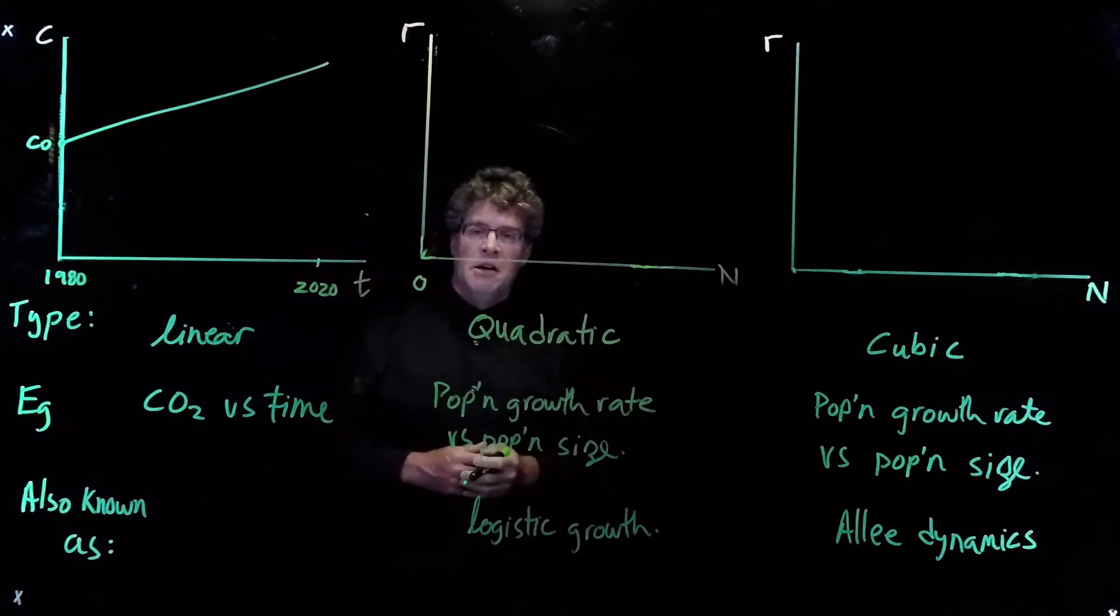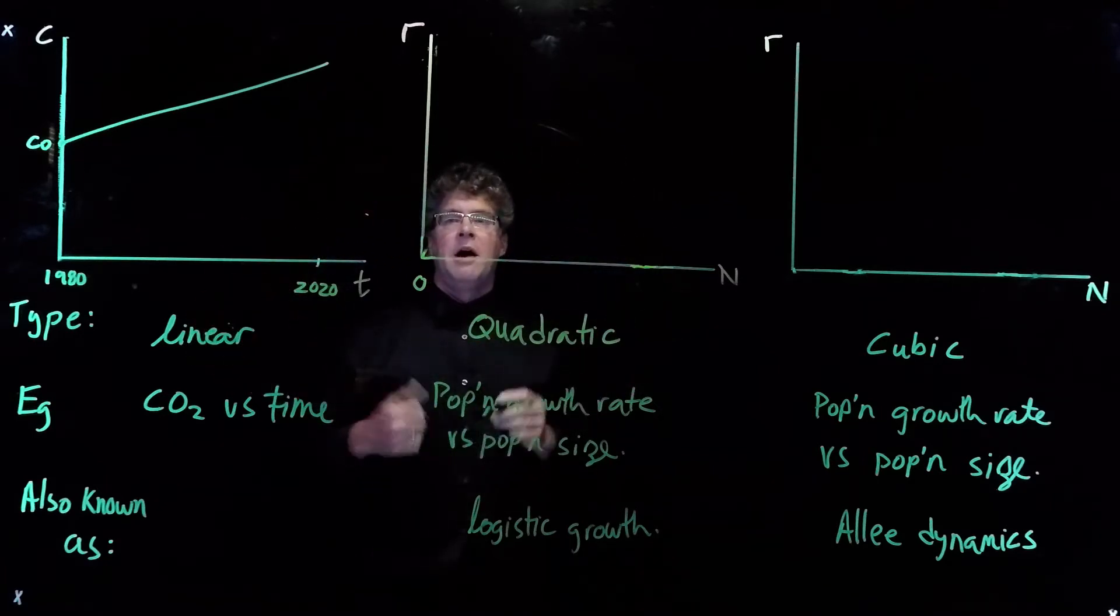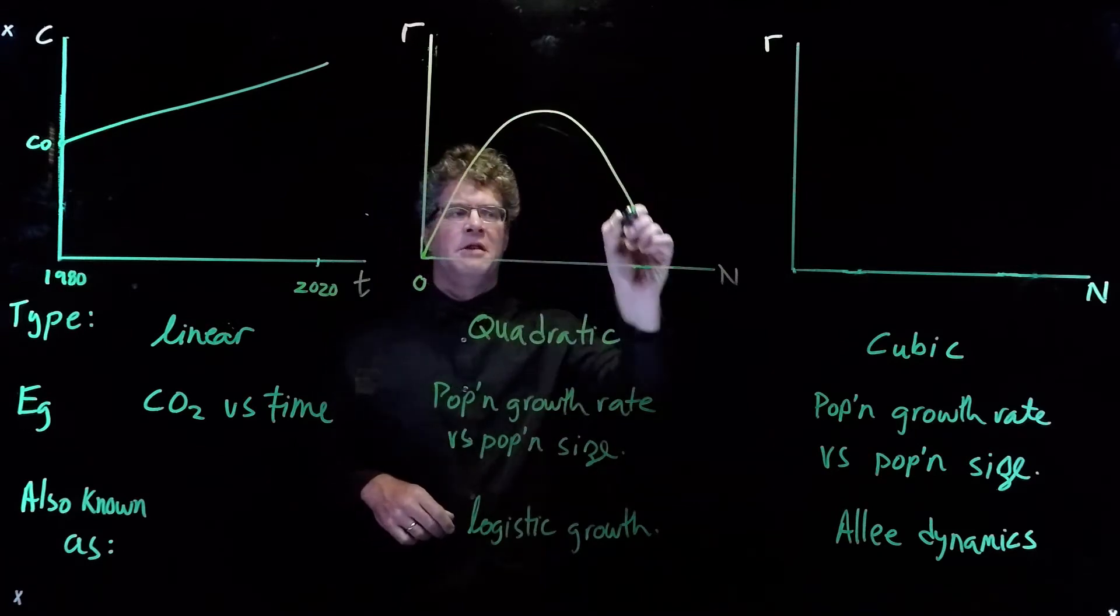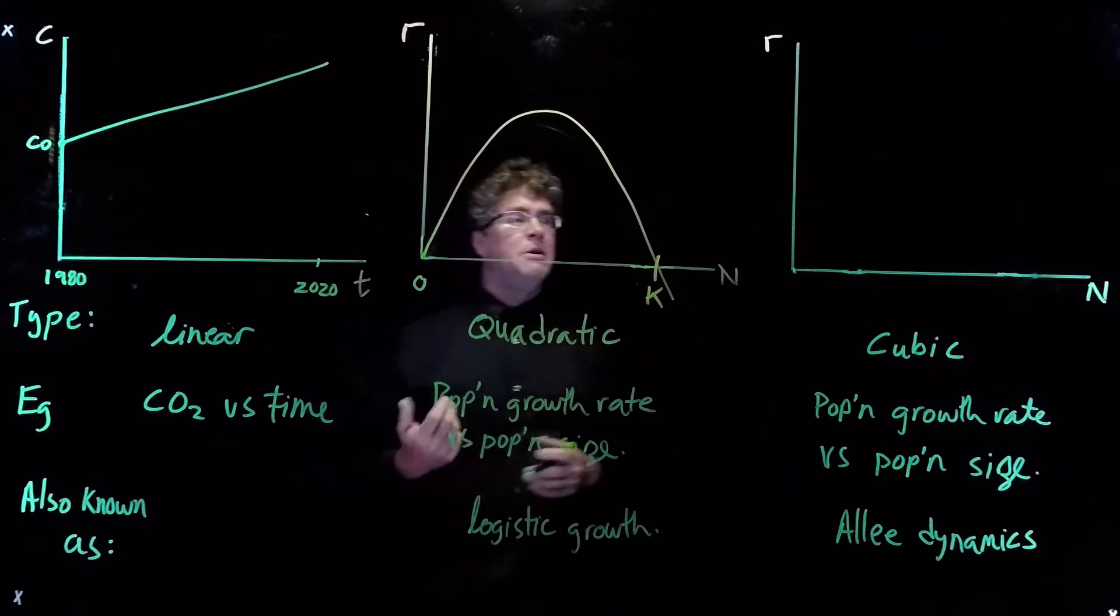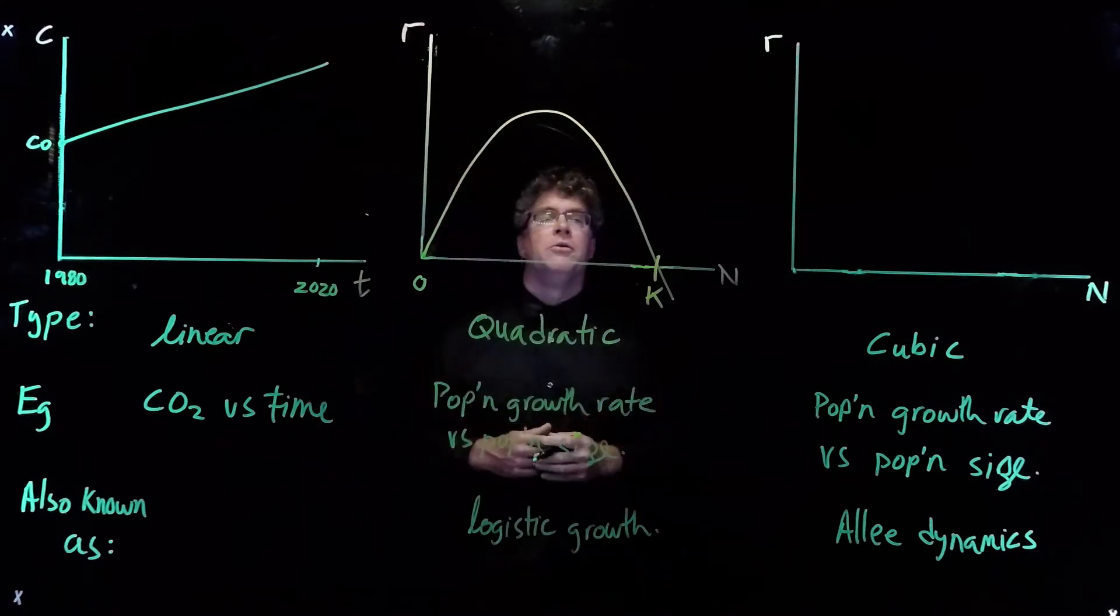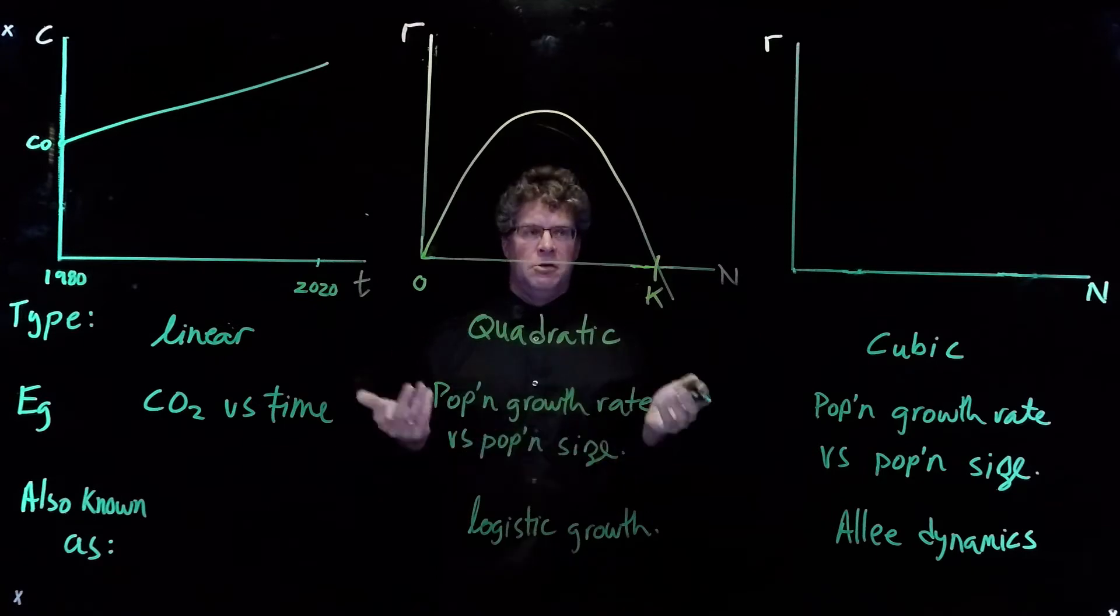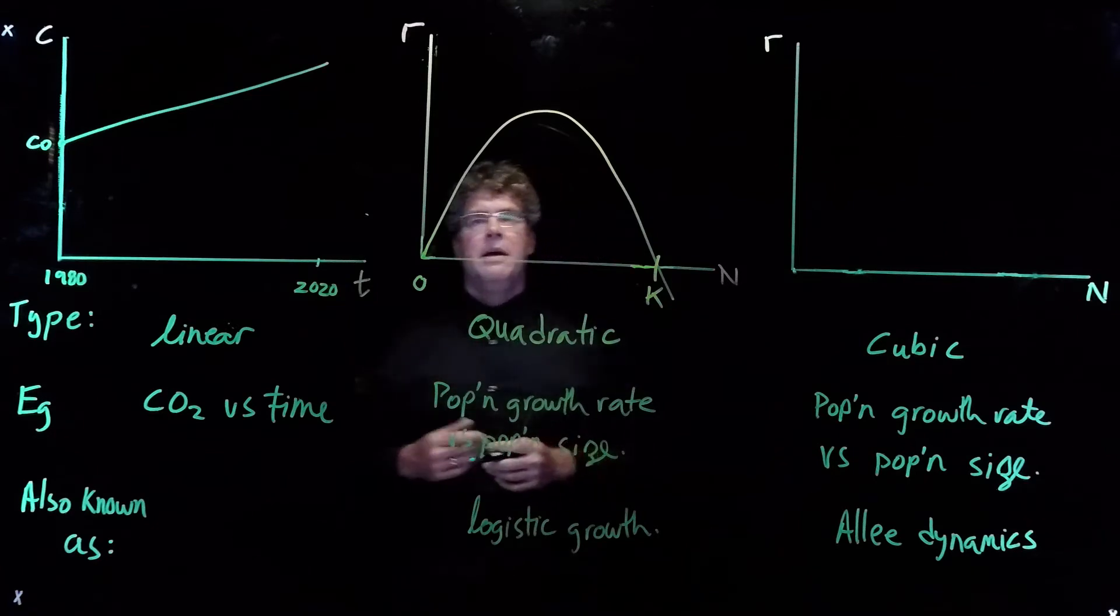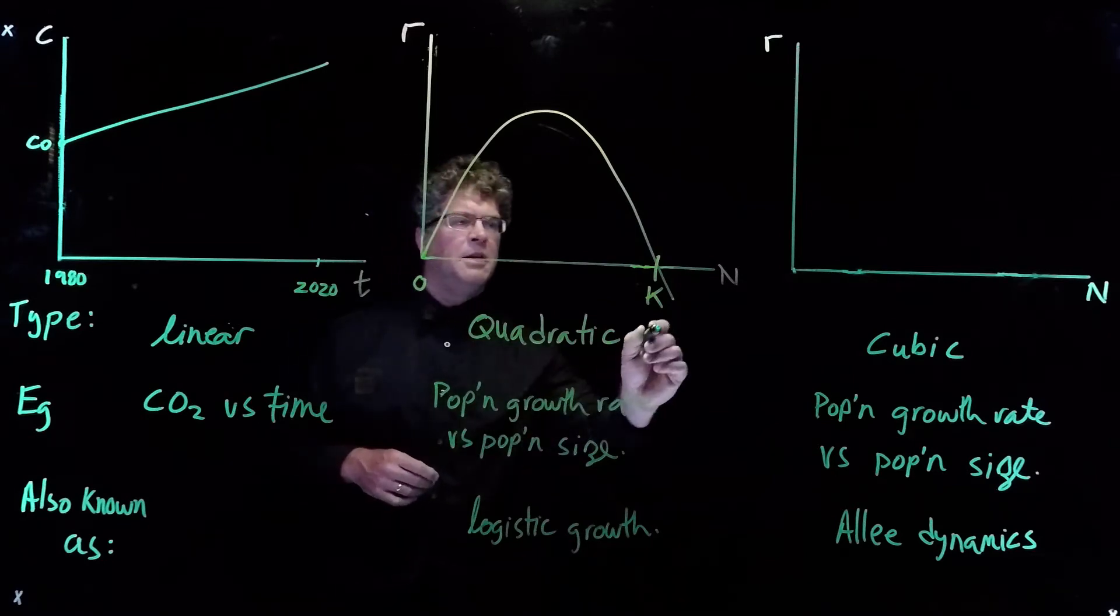Quadratic functions can either be happy faces or sad faces. I'm going to draw a sad face quadratic function. It goes up and comes down like this. And this model has been used for population growth. The horizontal axis shows the population size. The vertical axis shows the population growth rate. The population declines when it's above the carrying capacity here.